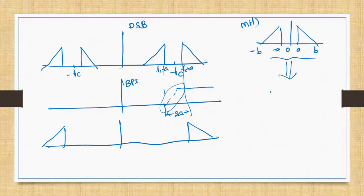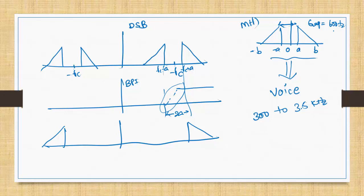What signals do not contain very low-frequency components? The practical application is voice. Generally, our voice spectrum has its significant portion starting from 300 Hz to about 3.5 kHz. So you are getting a spectral gap of 600 Hz. If you can design a band pass filter where the transition roll-off is within 600 Hz, then you can comfortably get the upper sideband and lower sideband without any distortion.